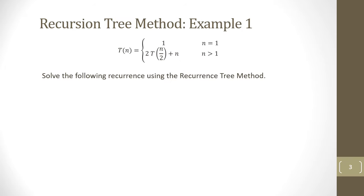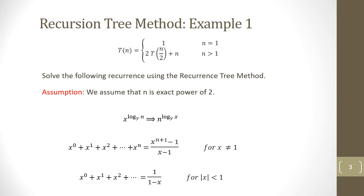To see how the recursion tree method works, let's solve the recurrence of merge sort using the recursion tree method. Since the problem size is being divided into equal halves, we assume that n is an exact power of 2. Before we start, let's look at the following properties we will need. The first property is the logarithmic property: x to the power of log base y of n is also equal to n to the power of log base y of x — the x and n have exchanged positions. The proof of this is not in scope for this course.